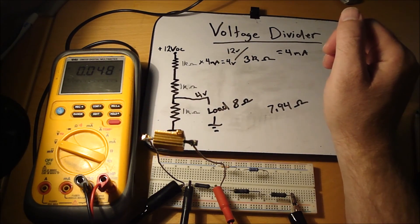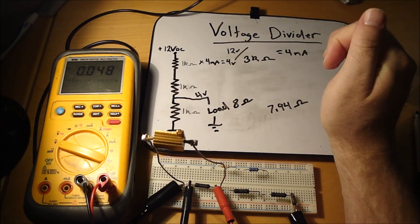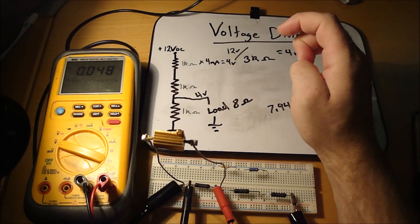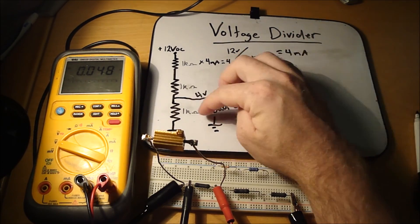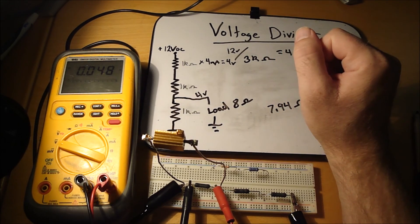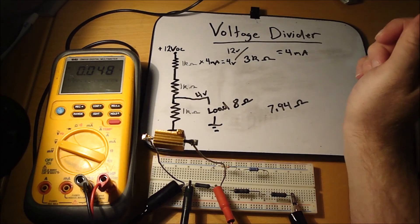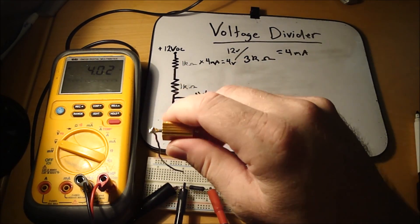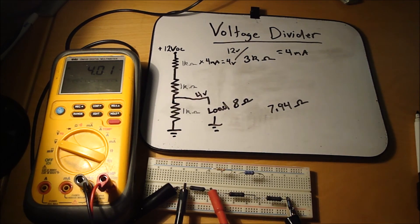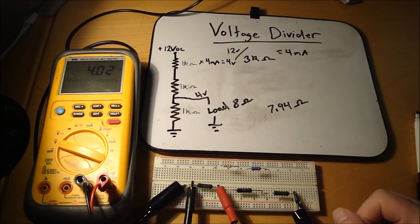When using a voltage divider circuit, you can't just put a load across one of the resistors expecting to maintain that voltage, because adding the load changes the total resistance of the circuit. Another way to calculate voltage in a divider is by using percentages.